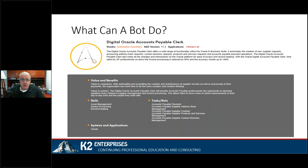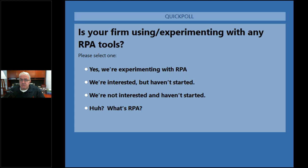Third poll question: is your firm using or experimenting with any RPA tools? Options: yes, we're experimenting with RPA; we're interested but haven't started; we're not interested and haven't started; or what's RPA? When I mentioned Excel macros, both Tom and Sharon got very excited — they're big fans. These RPA tools let you go past what macros can do, where you're just limited to ingesting and cleaning data. A more sophisticated Excel tool that's almost an RPA tool is Power Query, also known as Get and Transform. If you haven't explored it, it's life-changing.